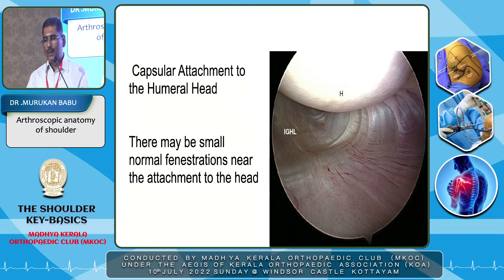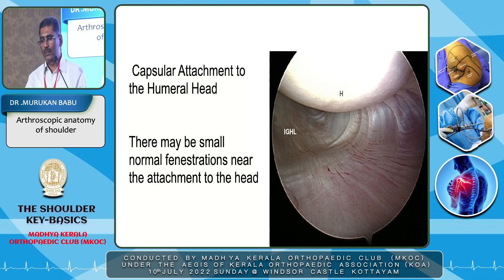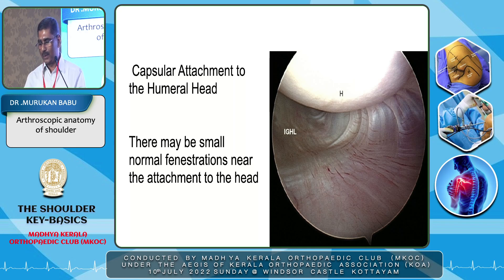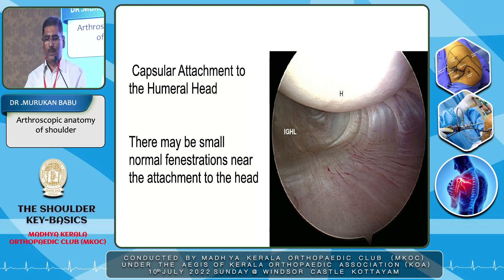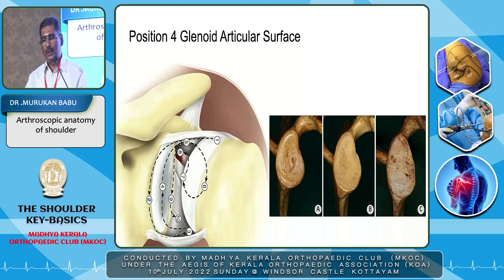Then you introduce the scope down and look upward to see the attachment of the capsule at the humeral head. This is a very good picture taken from Snyder — I haven't seen such a clear picture of the inferior attachment of the capsule into the humeral head. Sometimes there may be small normal fenestrations near the attachment to the humeral head.